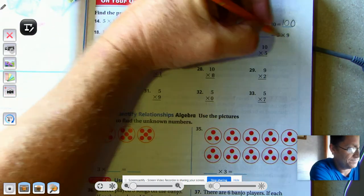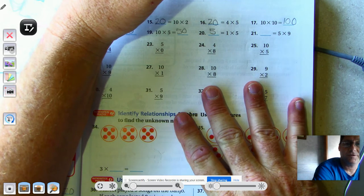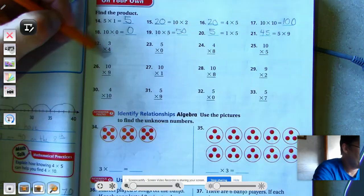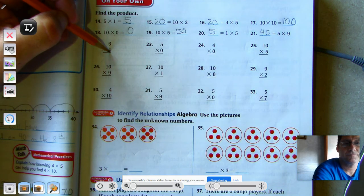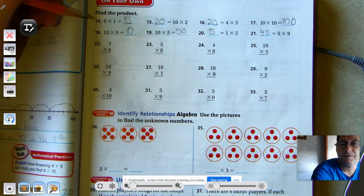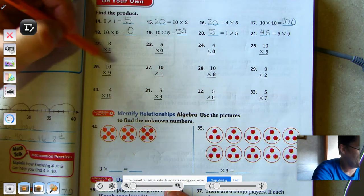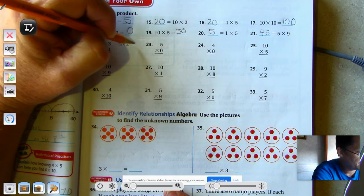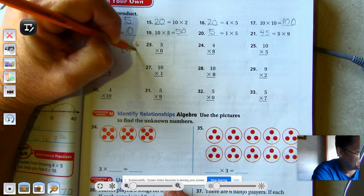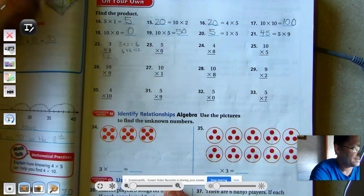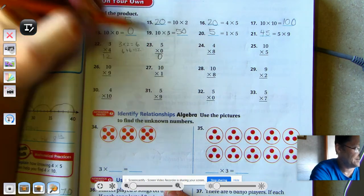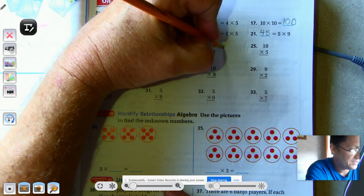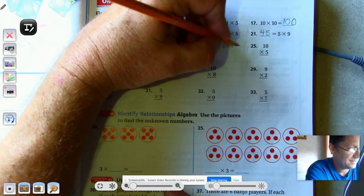Identity property of multiplication says that that's 5. 9 times 5: 5, 10, 15, 20, 25, 30, 35, 40, 45. 3 times 4, what's that got to do with multiplying by 5 and 10? So this is more of a review. Remember that 3 times 4 is the same as saying 3 times 2 doubled.